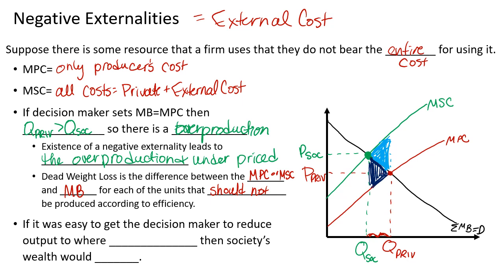If we could get the decision maker to reduce output to the socially efficient quantity Q-social, then society's wealth would actually rise, because we would get rid of that deadweight loss and no longer be overproducing.